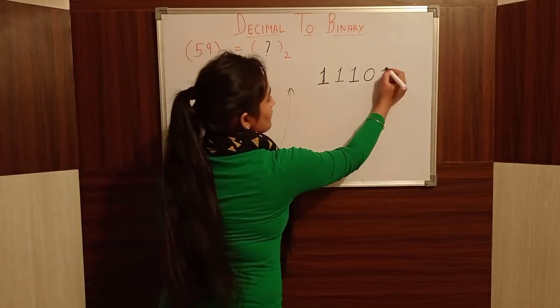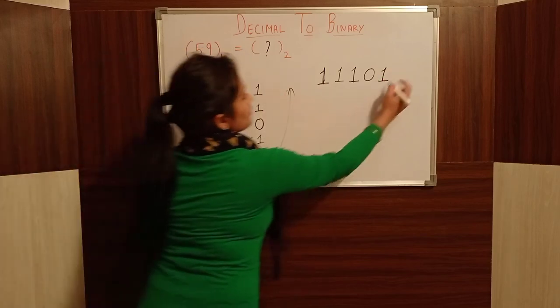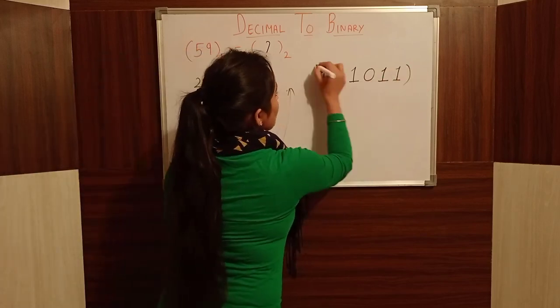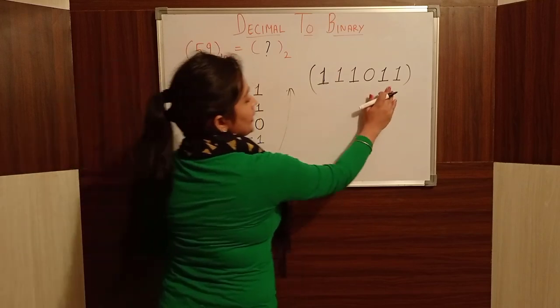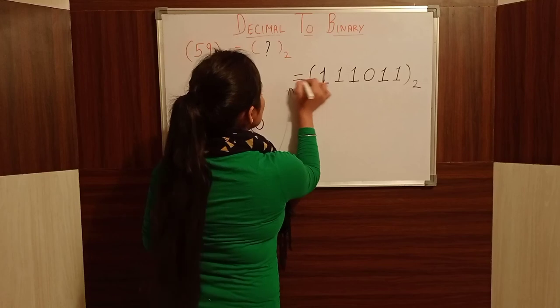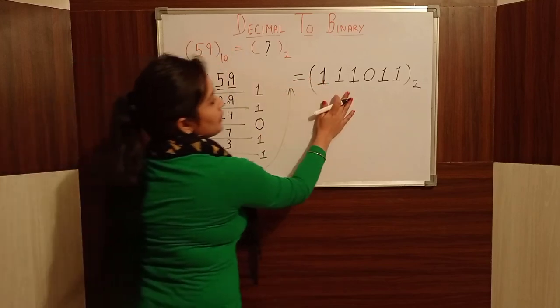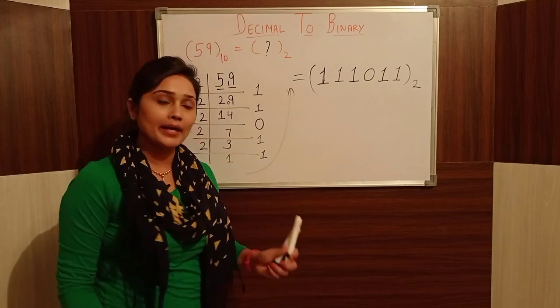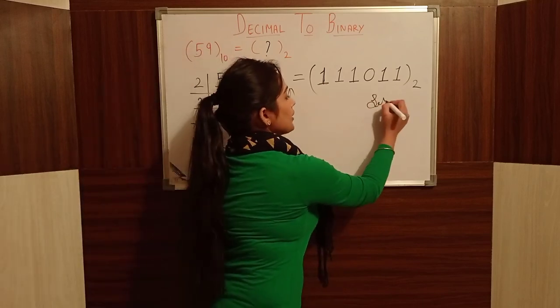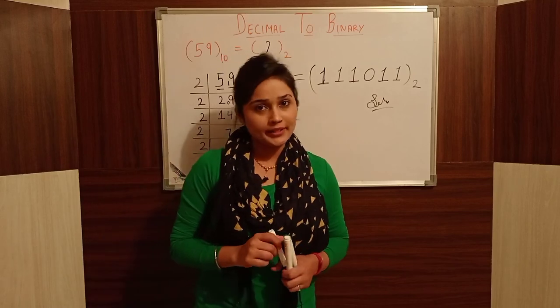Now we read the remainders. First 1, then again 1, then the other remainders. Binary numbers are 0 and 1. So now the binary number is final. For decimal 59, the binary number is 111011. This is our binary number, decimal to binary.